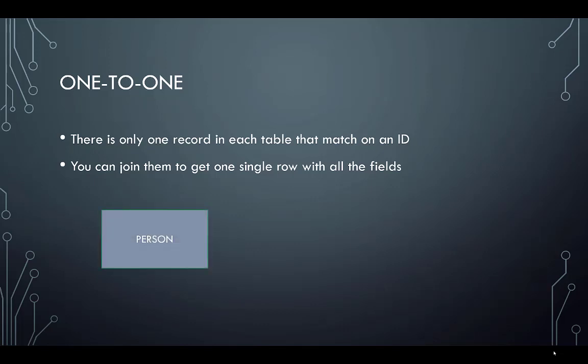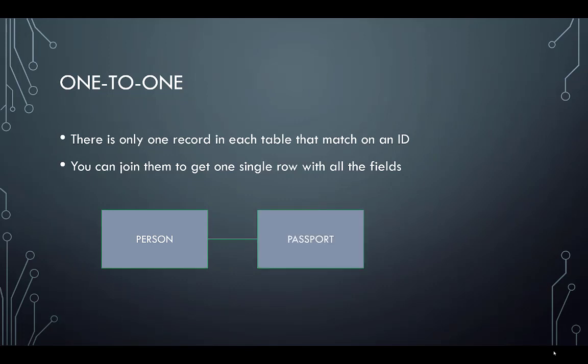For example, if we have a person and we have a passport, usually there's only one person associated with one current passport. So that would be a one-to-one relationship between tables in a database. One person would have one passport, and we can join those two tables together in order to get the information about the person and the passport.